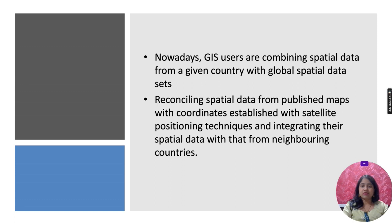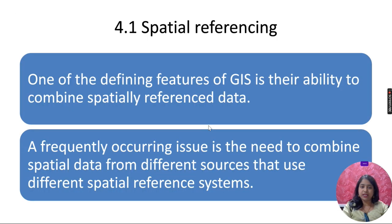Chapter 4 discusses the entire world, its structure, organization, which coordinate systems we are using, and how satellite positioning techniques are integrated with each other. GIS users are combining spatial data from different countries with global spatial data sets because each country does their own study. When we have to study neighboring countries, we need to combine the spatial data collected from neighboring countries and do a combined study.